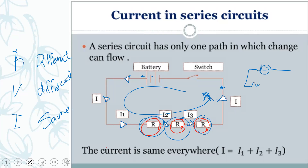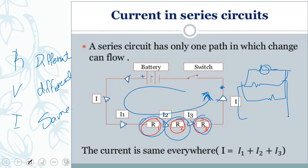In parallel, the current is divided and goes through multiple wires, so it would be different. But in series, there is only one wire, so there is only one current. This is the key property of the series circuit.